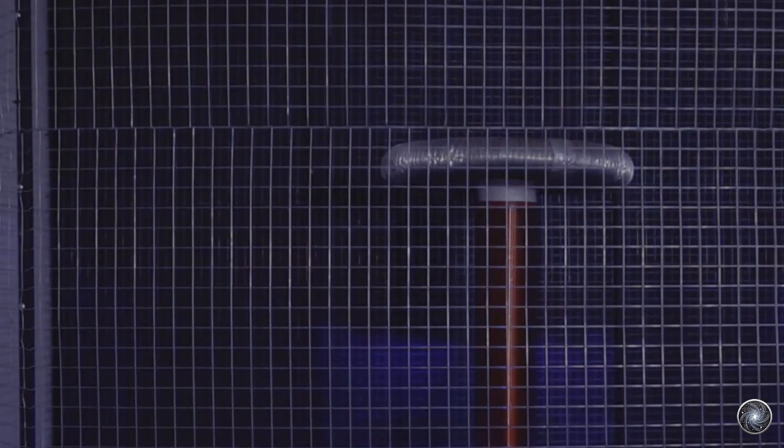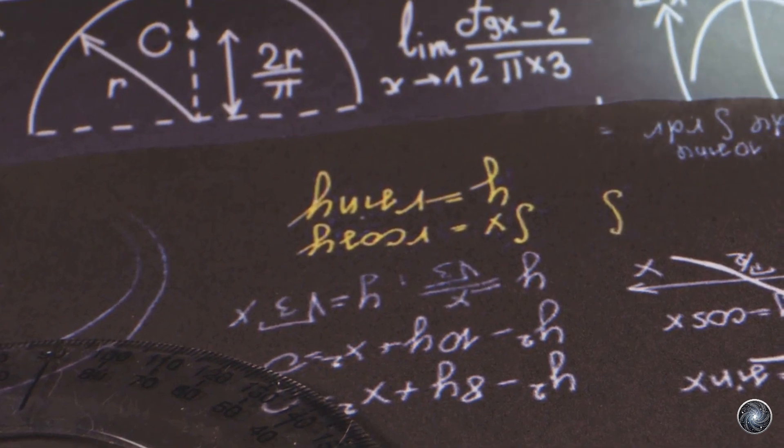Maxwell, with his math skills and smarts, took on the challenge. Using Faraday's experiments and other scientists' work, Maxwell wrote equations that changed how we see the universe.